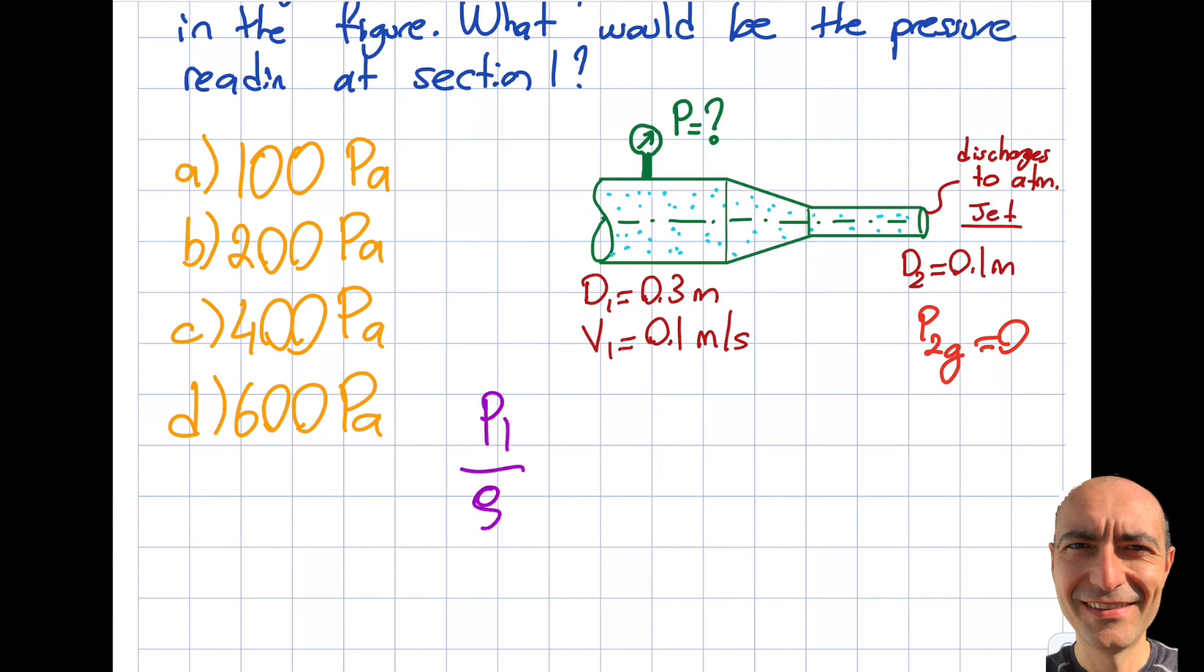So P1 over ρ plus V1² over 2 plus gz1 equals P2 over ρ plus V2² over 2 plus gz2.